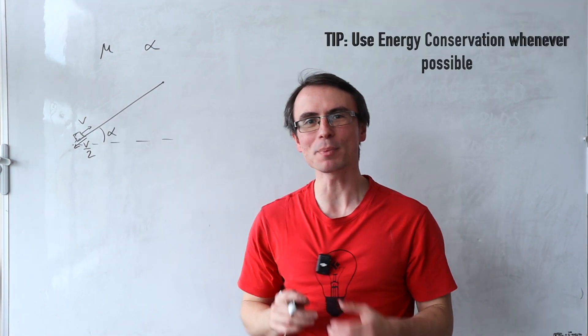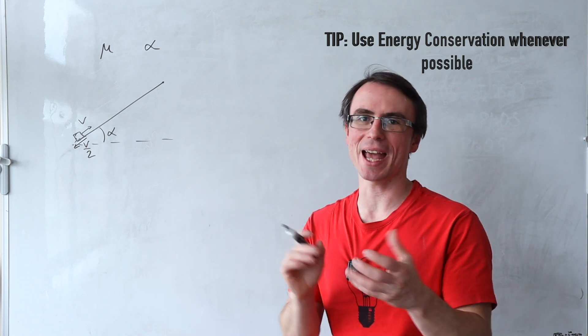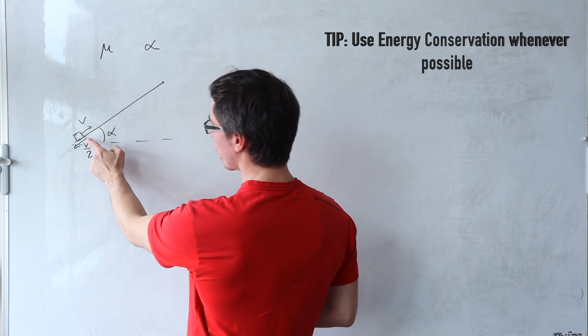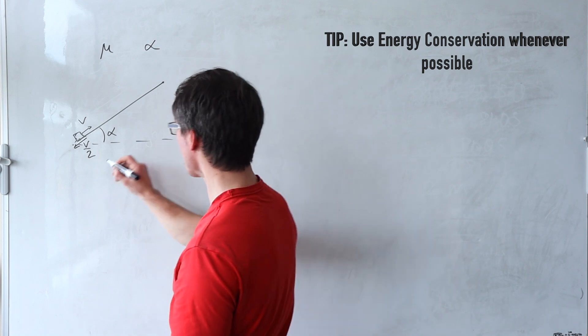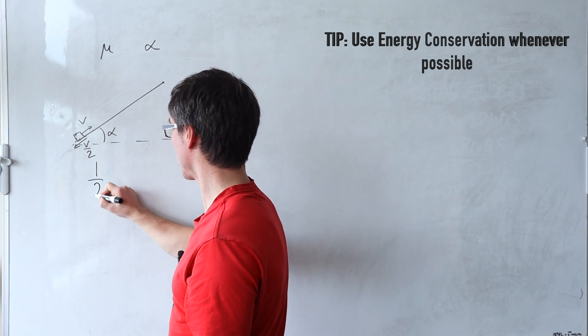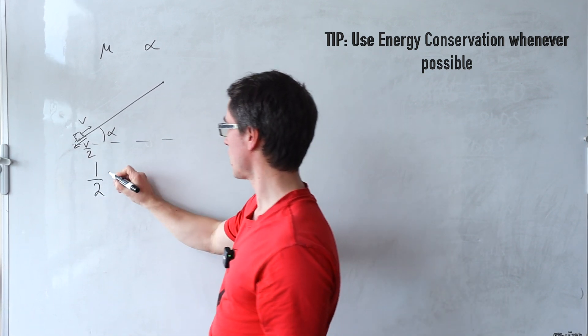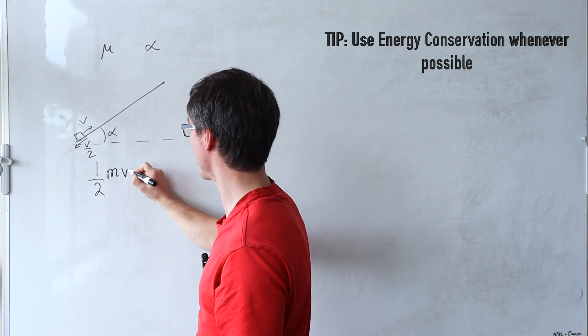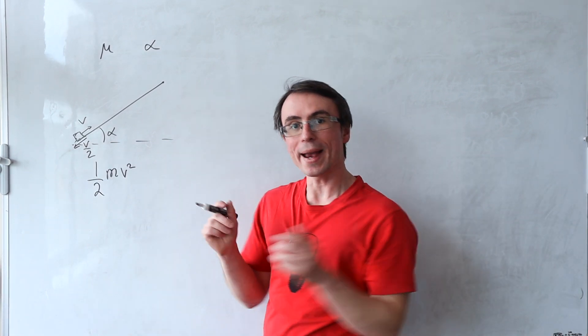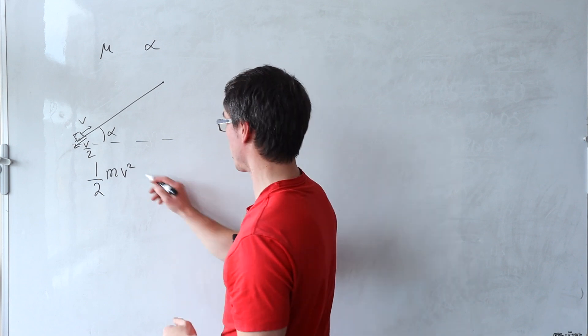These problems are typically way easier to solve using energy. So we start off with a certain kinetic energy and let's say that my input kinetic energy is a half mv squared, where m of course is the mass of this body.